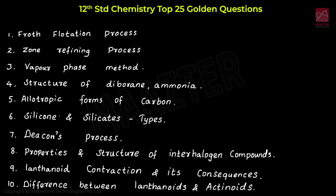For Unit 1, the very important golden questions are: the flotation process, zone refining process, and vapor phase method. These are very, very important questions.